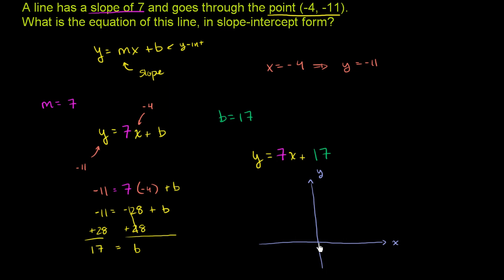The y-intercept is 17. So that means that the point 0, 17 is on this line. So this point right over here is going to be 0, 17.